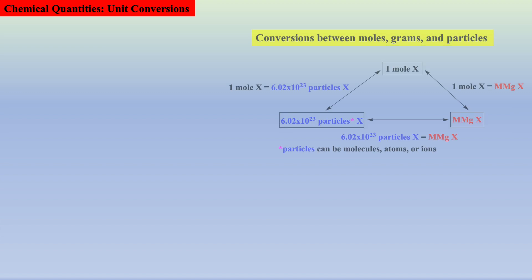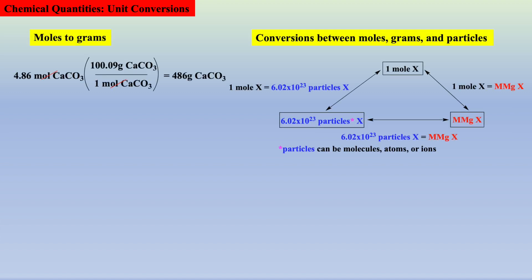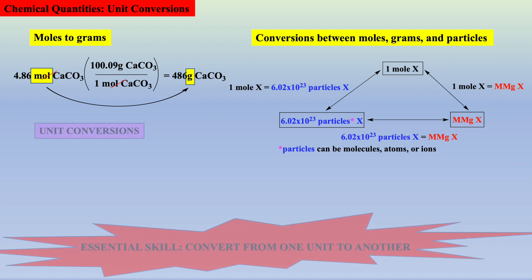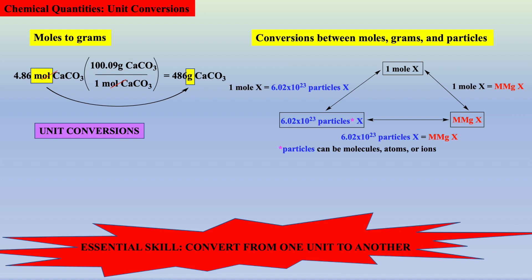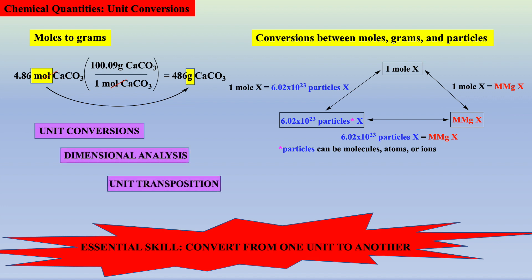To understand concepts within chemical quantity conversions, such as converting moles of a substance to grams of a substance, it is best to take a step back and review the concepts within basic unit conversions, which is sometimes called dimensional analysis or unit transposition. To do this, we will begin with a simple conversion.